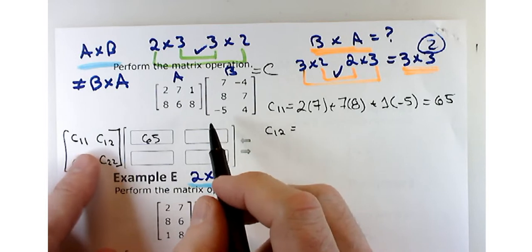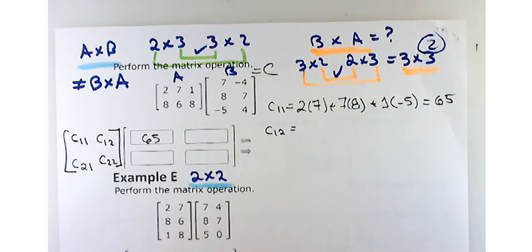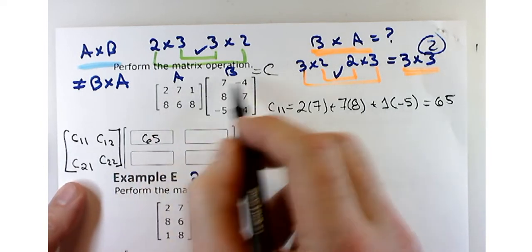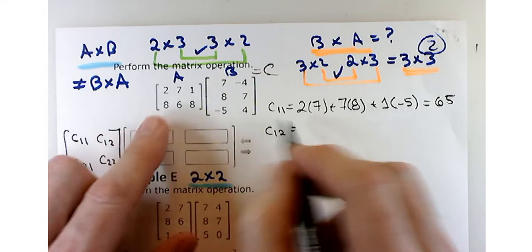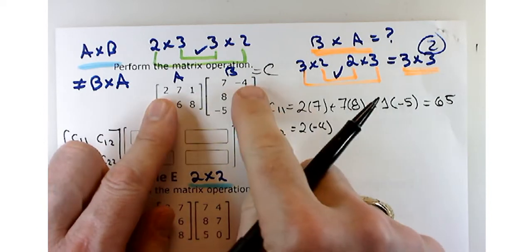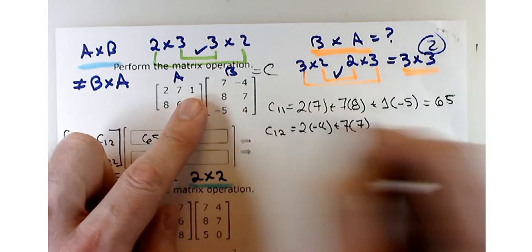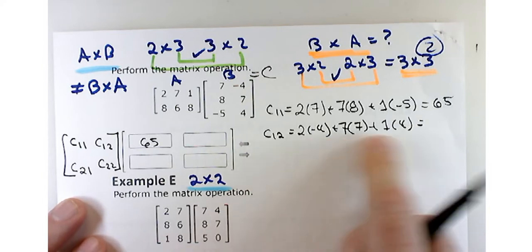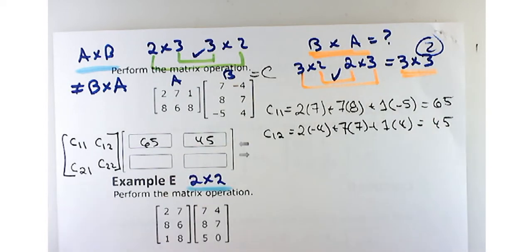For C12, that's the first row of A times the second column of B. That's going to be 2 times negative 4, plus 7 times 7, plus 1 times 4. So negative 8 plus 49 is 41, plus 4 is 45.